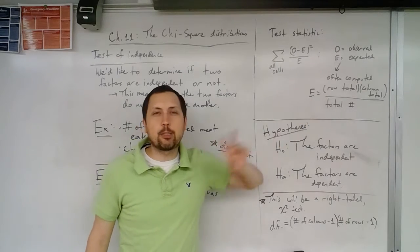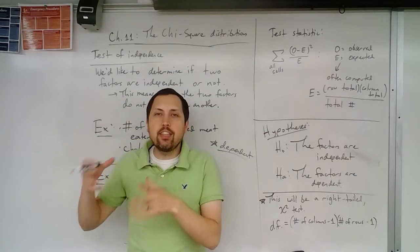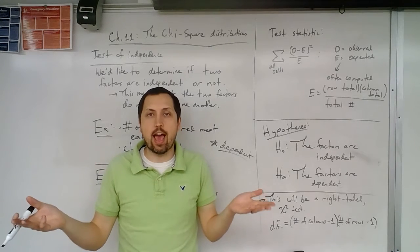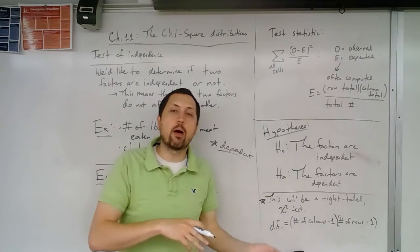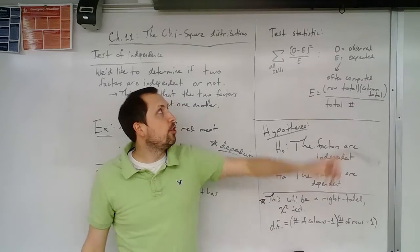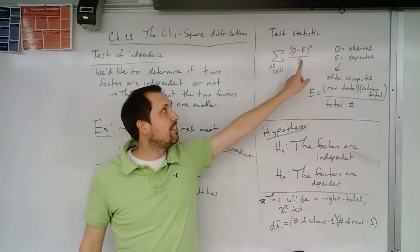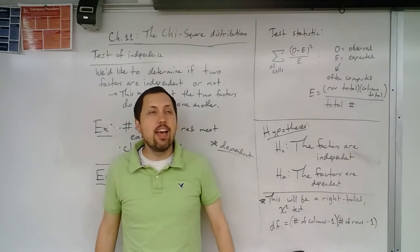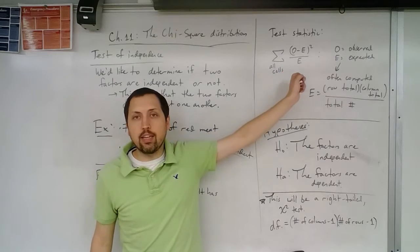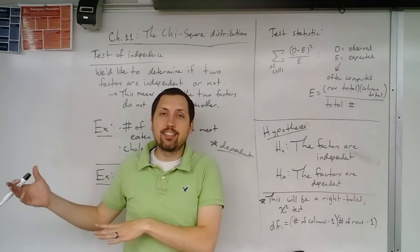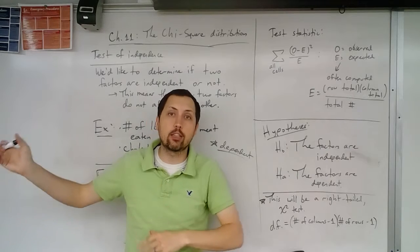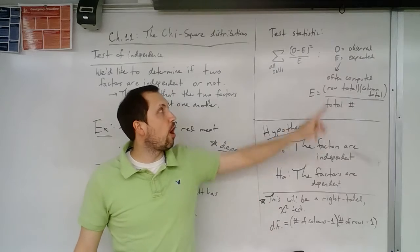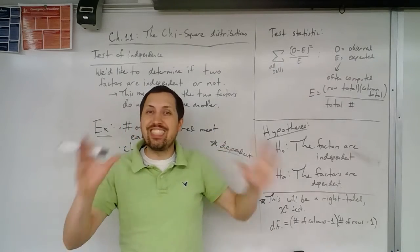And E, this is the expected. So we're saying that if these two are going to be independent of each other, what would we expect to have happened? But we observe something and see, okay, what's the difference between that? So the bigger this is, the bigger their difference is between the observed and the expected, then the larger this is going to be. The larger a test statistic is, that means the more likely it is that we're going to reject the null hypothesis, that there's going to be something going on here. So large values correspond to those being very different.